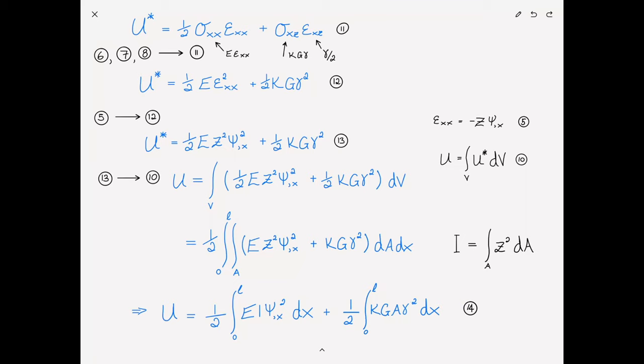Examining equation 14, the first term is the same as in the Euler-Bernoulli case — where w,x = ψ in the absence of shear, making this term EI·w,xx². The second term in the strain energy is the extra contribution added due to shear deformation.